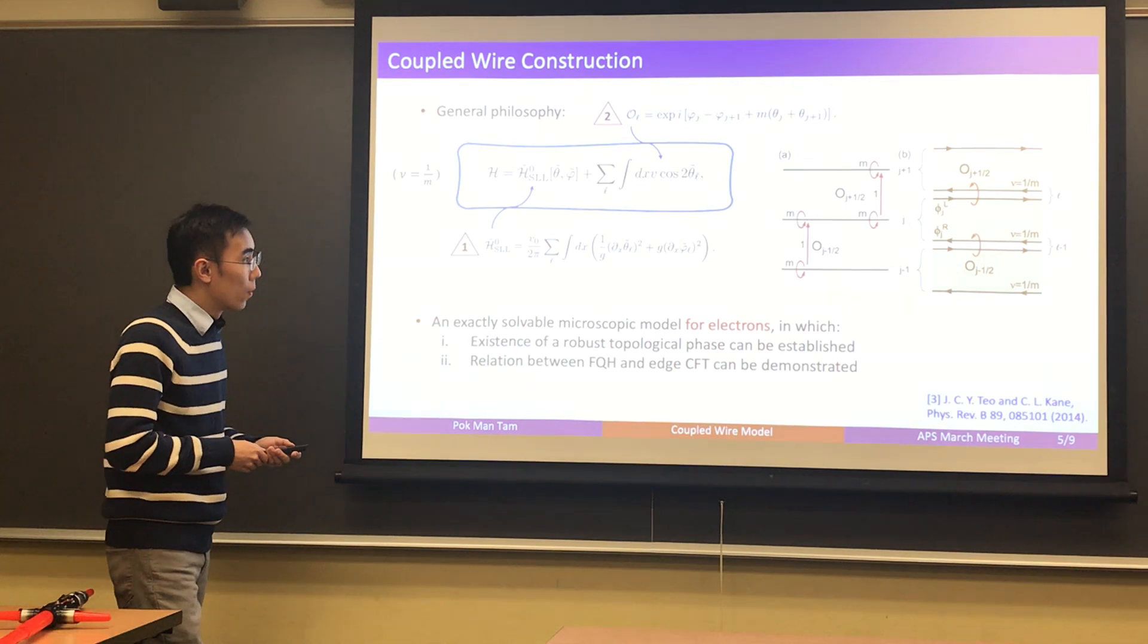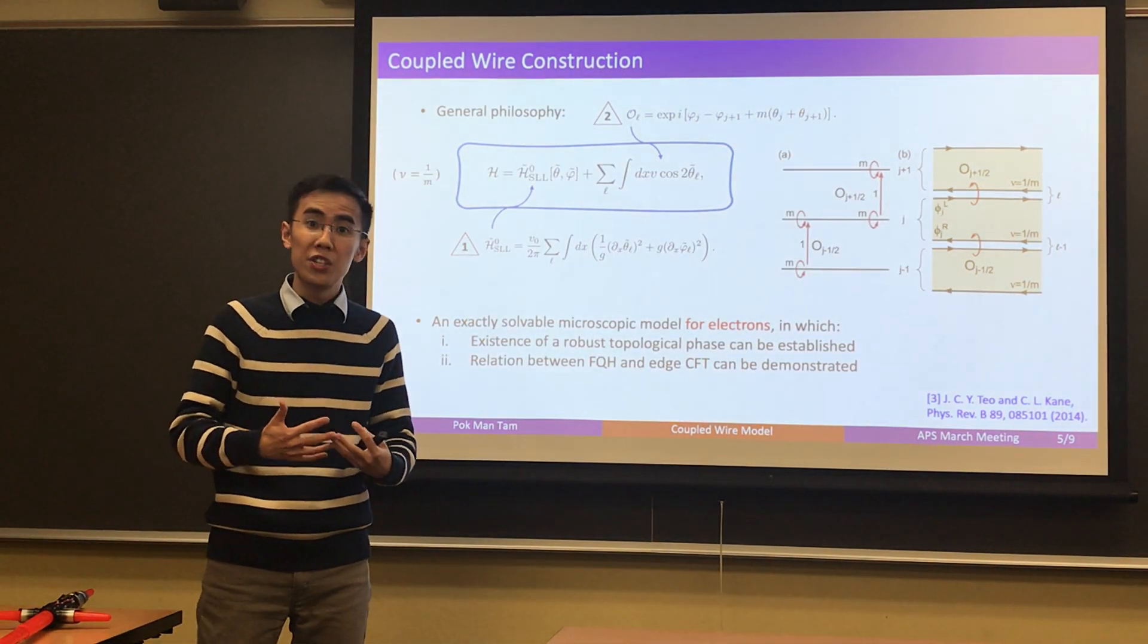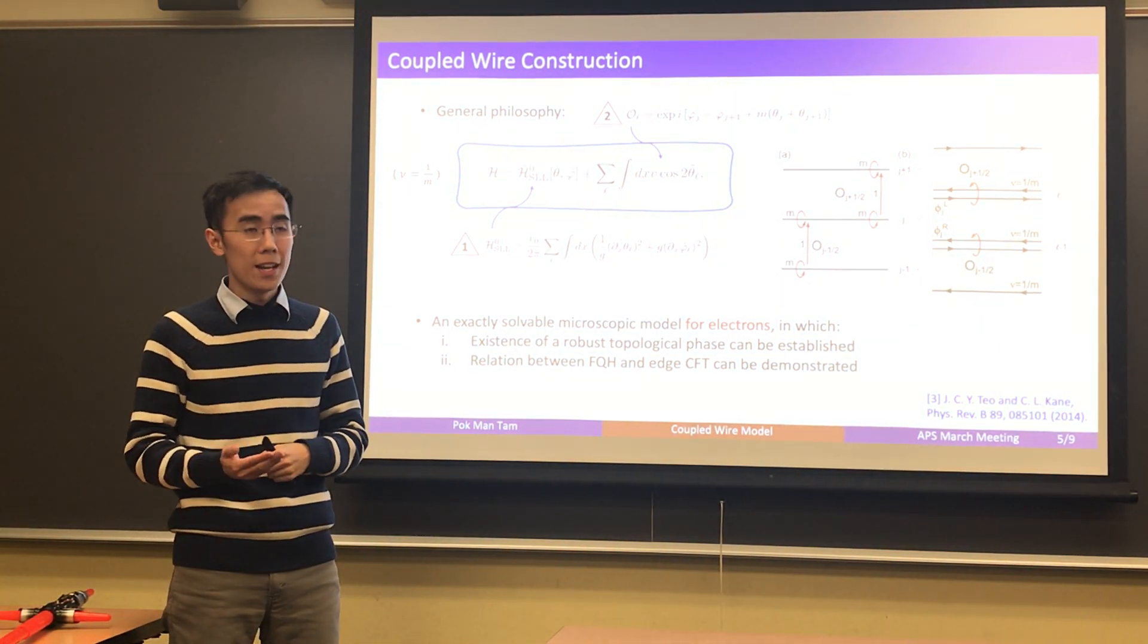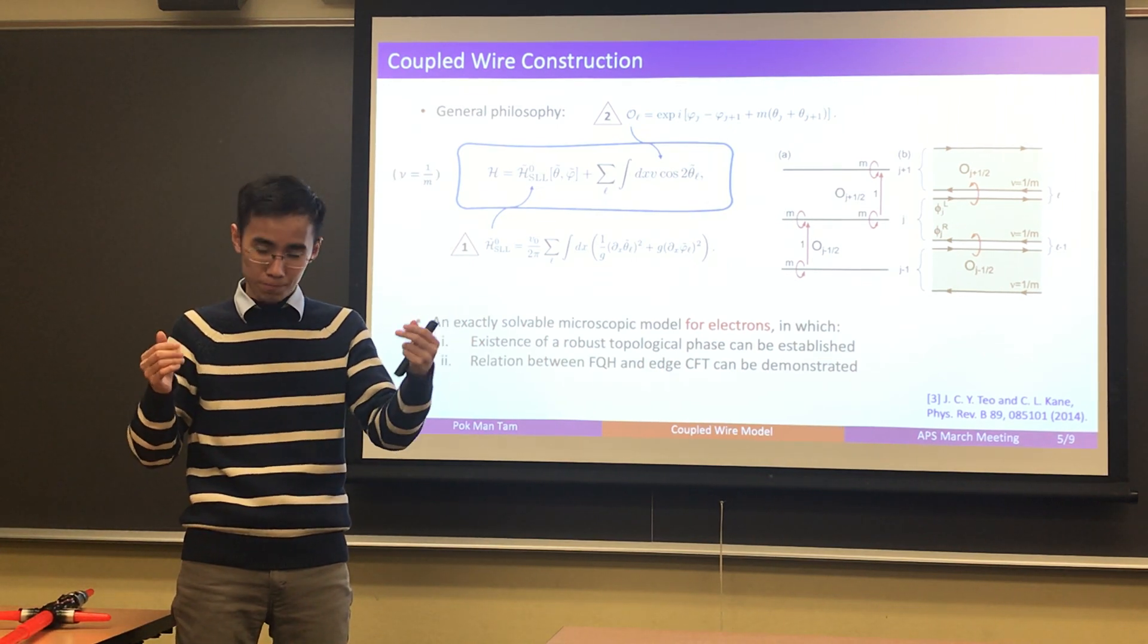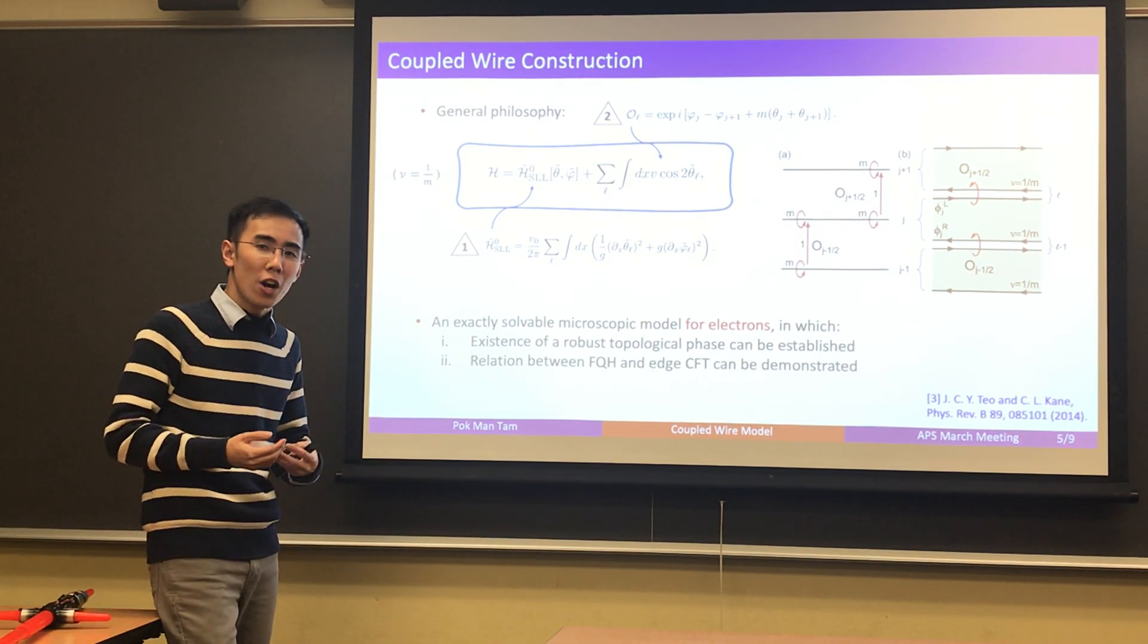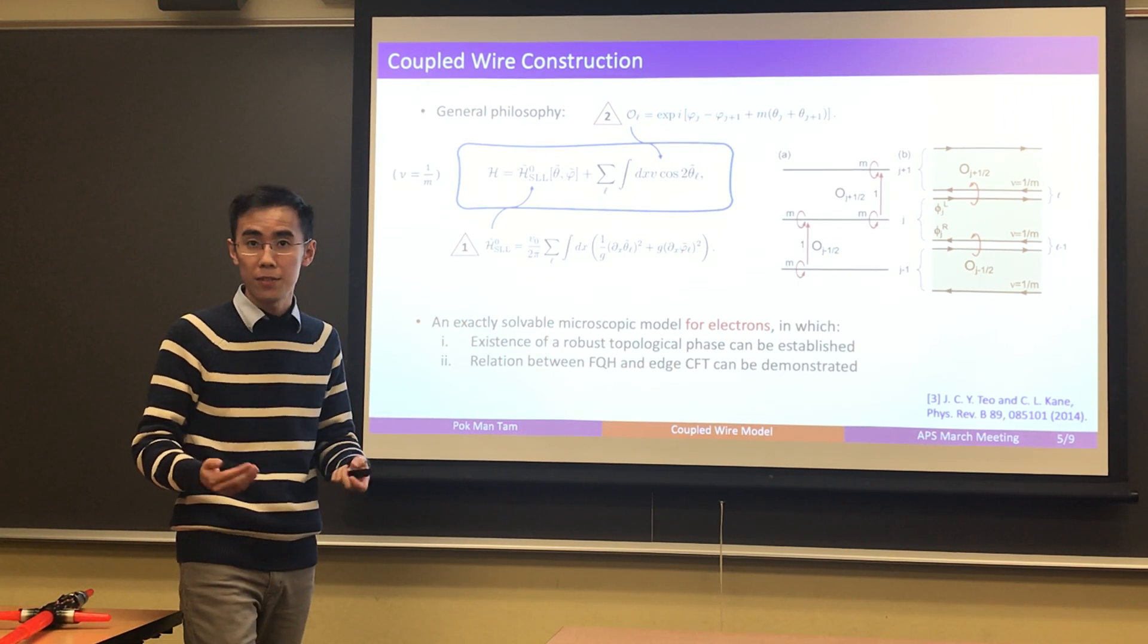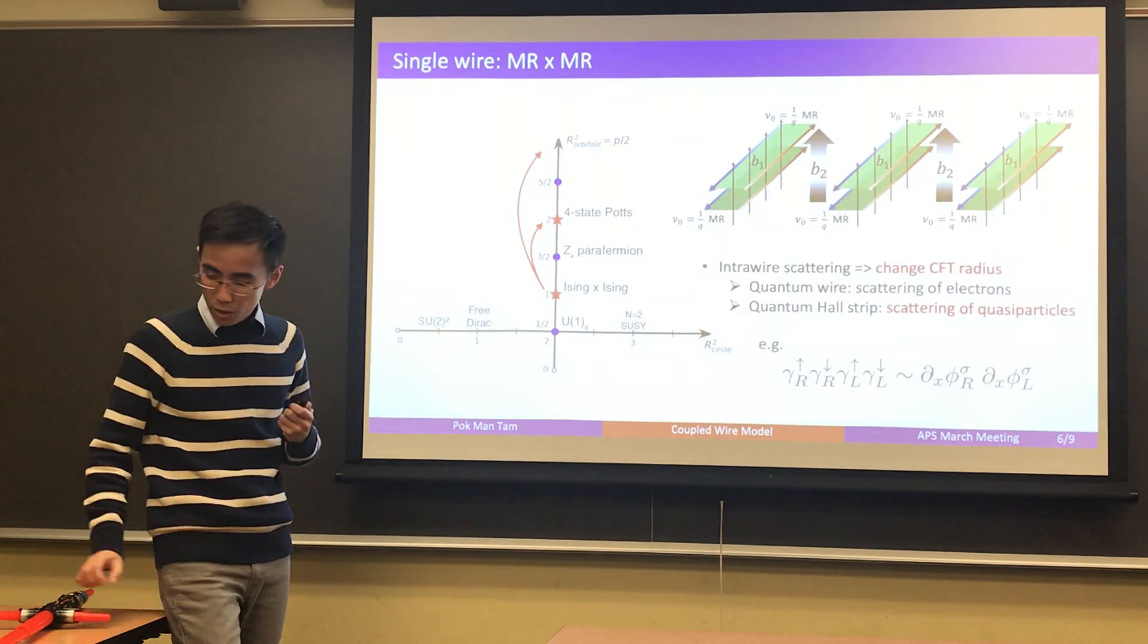First of all, it is an exactly solvable microscopic model for interacting electrons in which you can demonstrate the existence of a robust topological phase. And secondly, you can also demonstrate the explicit relation between a bulk-gapped topological phase and a gapless edge conformal field theory. So, now we have these ideas developed here. We want to borrow it and generalize it to construct the Z2 cross Z2 orbital quantum Hall state. The natural question to ask is, what do we take as a single wire in our model?